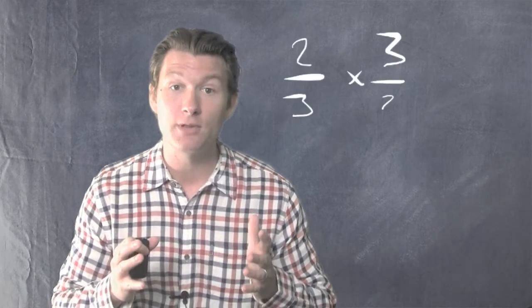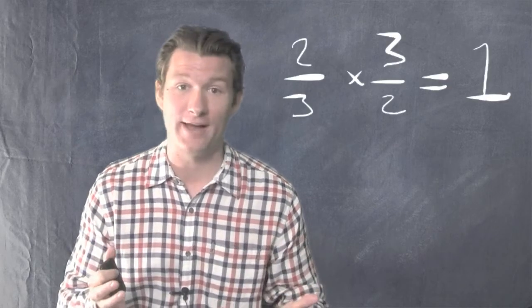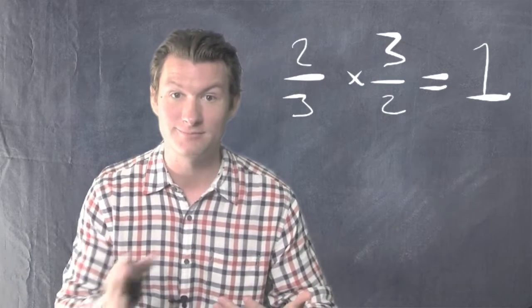Two numbers are reciprocal if they multiply to one. And they're easy to find, because all you've got to do is flip them. I'll show you what I mean.